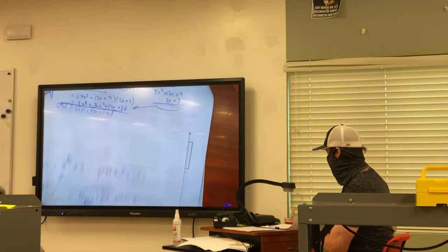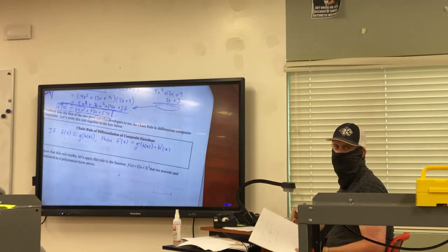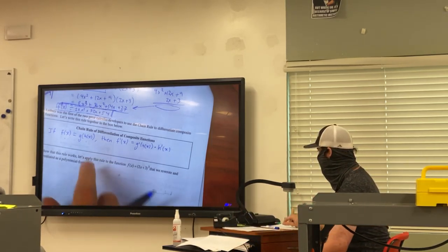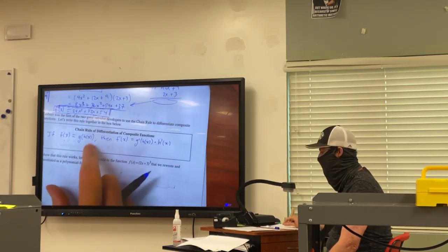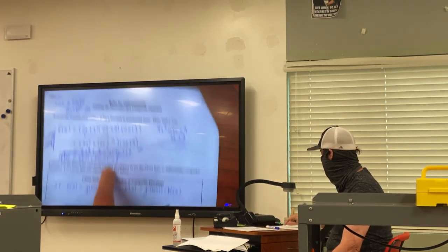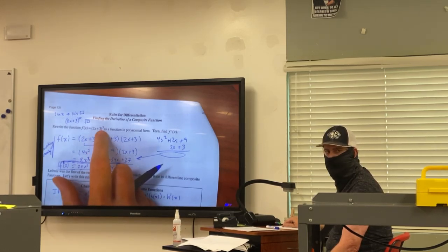So we're just basically, what we're going to learn is a shortcut that also works for things with sine, cosine, tangent that aren't polynomials. But I want to be clear on that. Like when I see g of h of x, it could just be something as simple as, like look at the top, 2x plus 3 cubed, right?